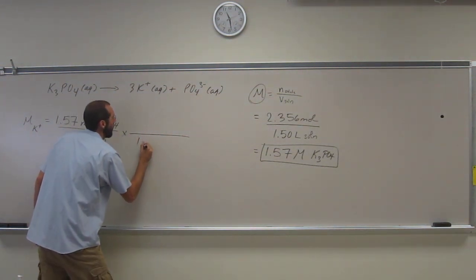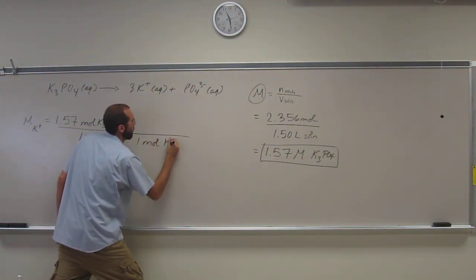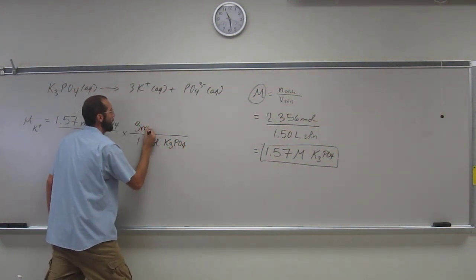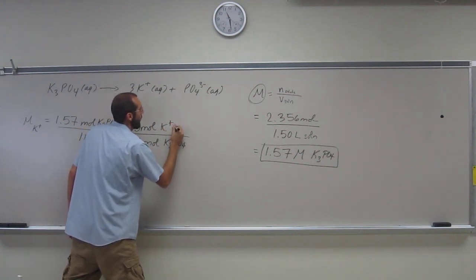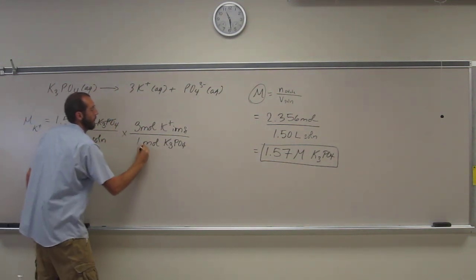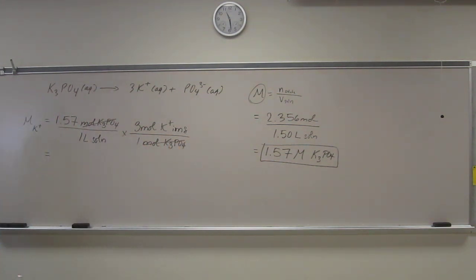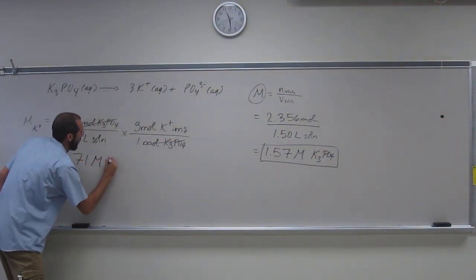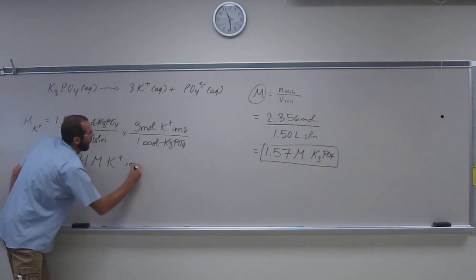So for every one mole of potassium phosphate, we've got 3 moles, very good, of K plus ions. So cancel, cancel, cancel, so times 3, 1.57 times 3, and I got 4.71 molar K plus ions.